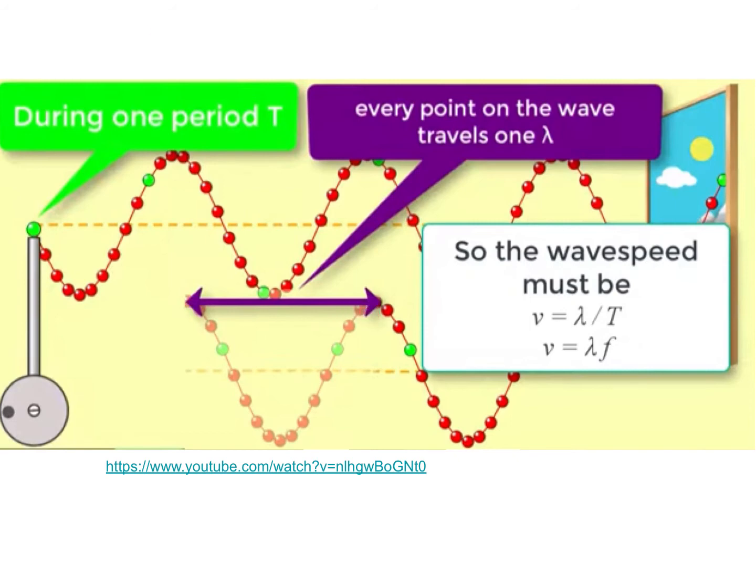Going back to our definitions of velocity, which is delta x over delta t, we've moved lambda distance in big T time, so our velocity must be lambda over T. Textbooks like to point out that that's the same as lambda times one over T, which is lambda f, so you'll often see this written as v equals lambda f, which is fine, and if you remember that, that's perfectly okay.